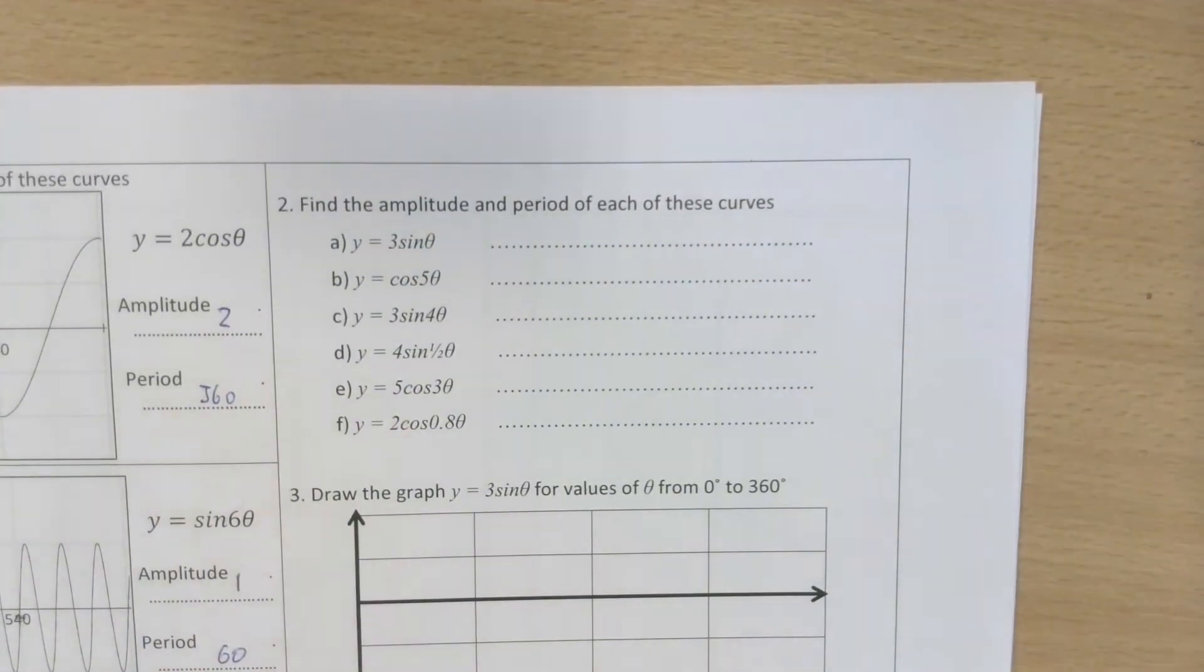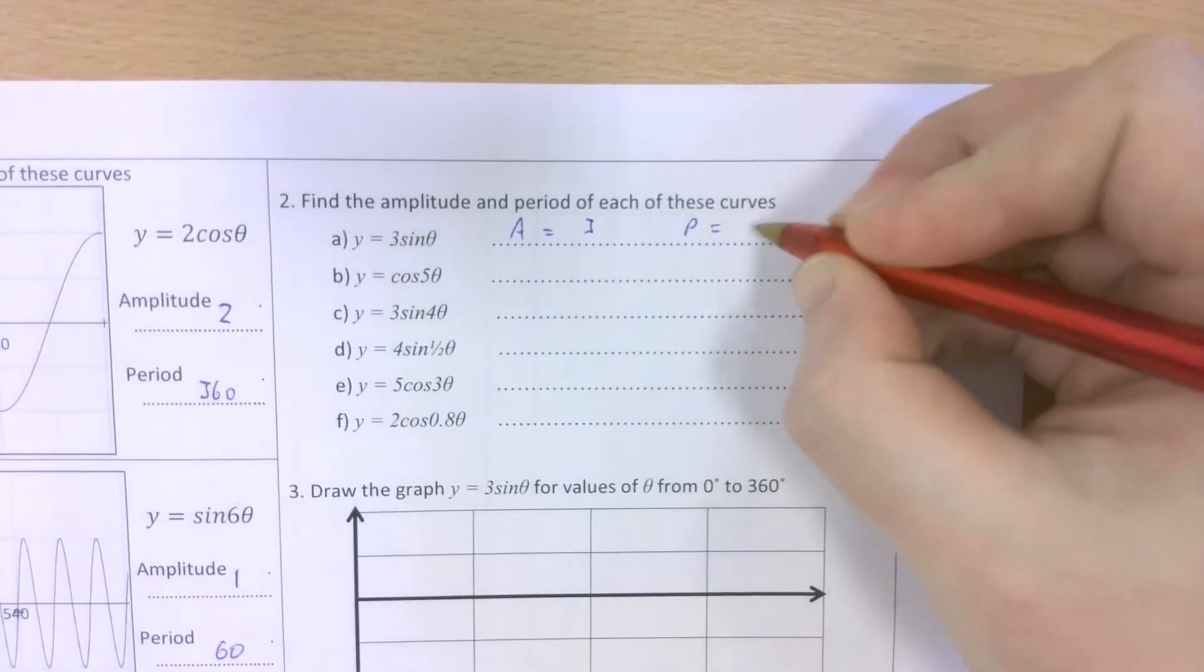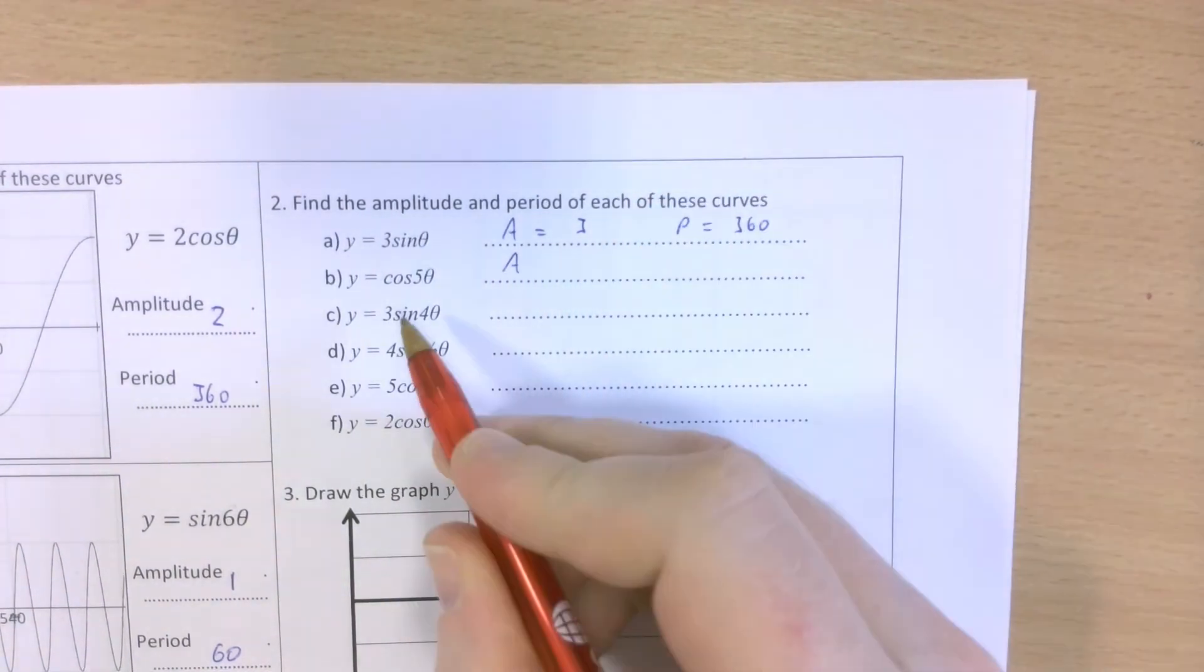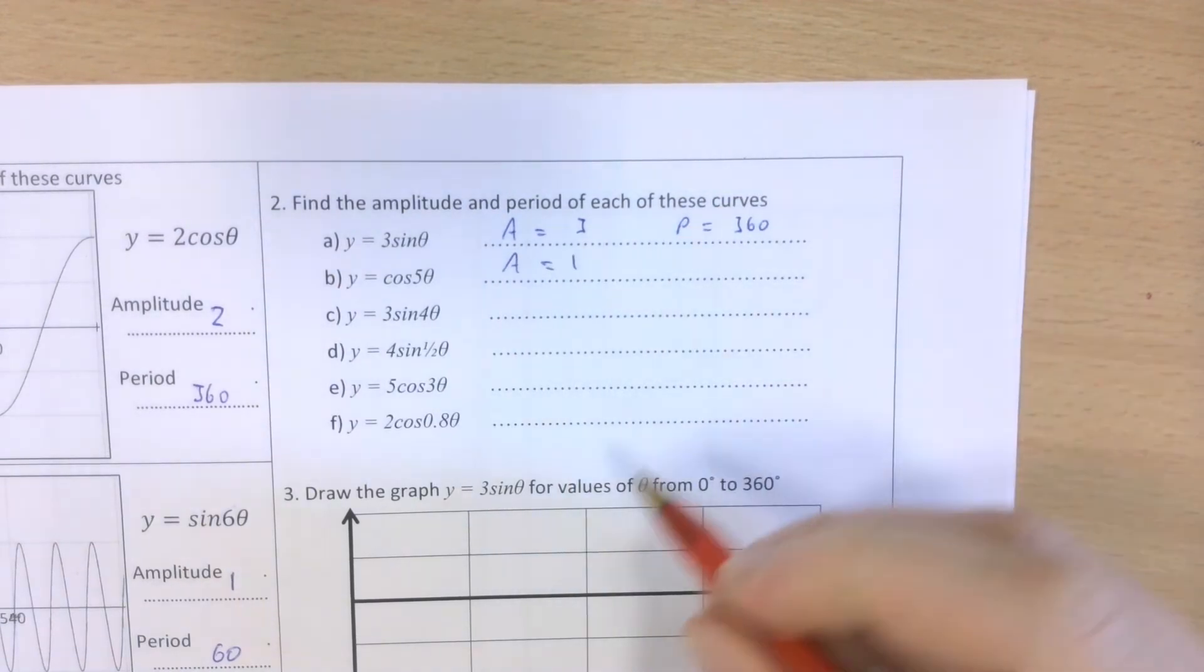Should be able to apply that straightforwardly enough to the curves that are here. A for amplitude, P for period. With cos, this one has just got cos itself, which is just an amplitude of 1.